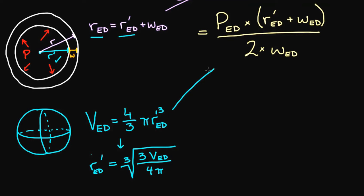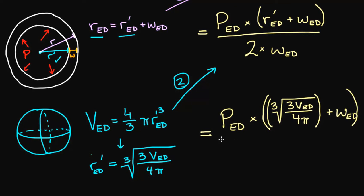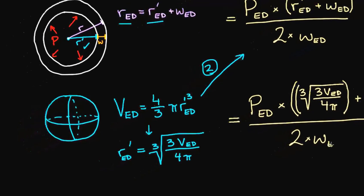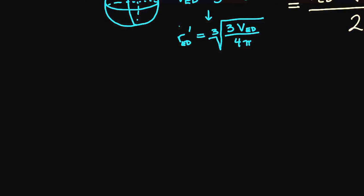In our second step, we plug that r prime equation in. I know it might seem like I'm taking something simple and making it more confusing, but in the long run it will help us out. We still have our wall thickness, and we divide everything by 2 times w at end of diastole. Two big changes have been made, but the equation is still not that different from where we started. There's one final step to take.